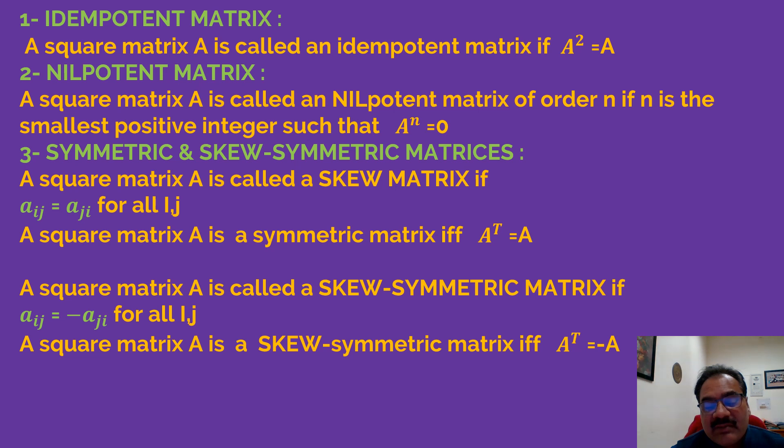A square matrix A is a symmetric matrix if and only if transpose of A, A^T = A. And this is about the symmetric matrices.